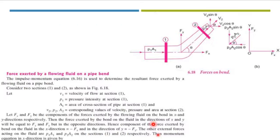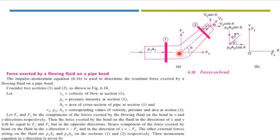Now we will discuss the force exerted by a flowing fluid on a pipe bend. Before deriving the formula, we study this figure, which represents force on a pipe bend. This is a pipe which is bent at an angle theta. We have to find the resultant force exerted by the flowing fluid on this pipe bend. Consider two sections: section 1 and section 2. V1, P1, and A1 are the velocity, pressure intensity, and area of cross section at section 1, and V2, P2, and A2 are the corresponding values at section 2.